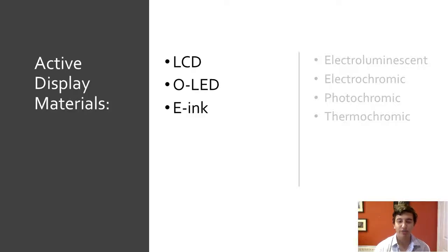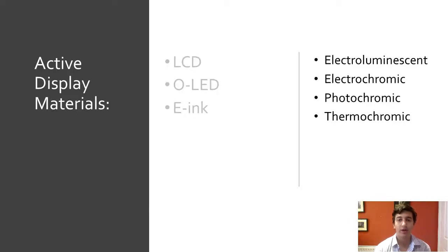There are a range of different display types. On the left we have examples of displays that are created in enclosed manufactured form. We have liquid crystal displays used in computer screens, organic LEDs increasingly used in TVs and electronic ink used in e-readers. On the right we have materials that have been used in display fabrication. They are suitable for fabrication because they can be layered on as a paint or as an ink. These materials have different stimuli and either emit light or change colour.